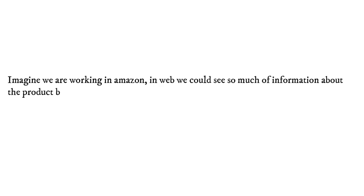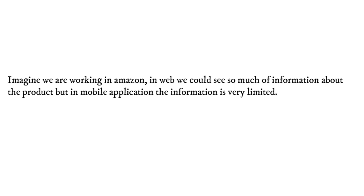Imagine we are working for an e-commerce application like Amazon. In the web application, we can see a lot of information — product details and everything. But in the mobile app, we have a limited description or information about that product. Now suppose we create a single API that gives data to both the web and the mobile application — for example, a get-product API that returns 100 fields.